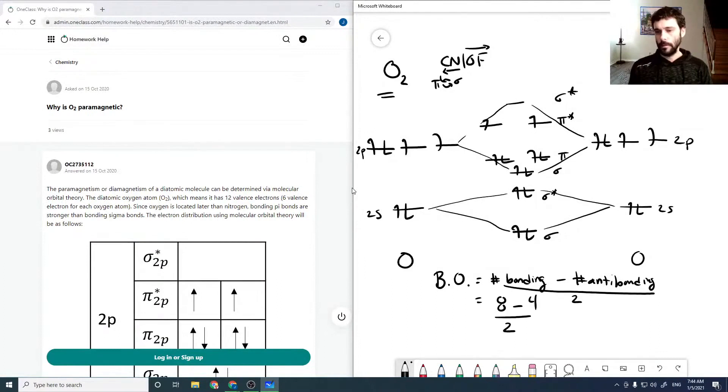Which is equal to 4 over 2, which equals 2. So it's a double bond for oxygen as we already know, so that's good.